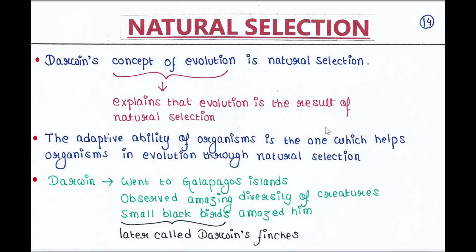And these individuals will go through evolution. So this is the simplest explanation of Darwin's theory of natural selection.